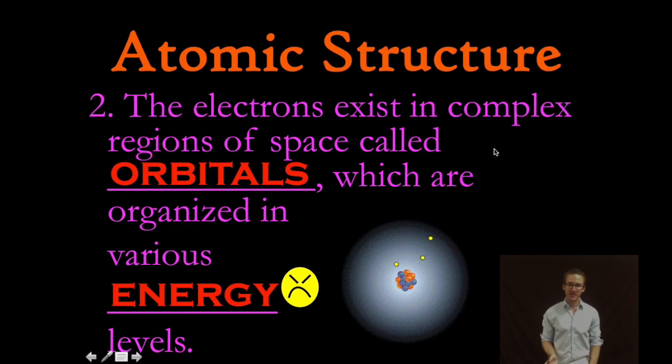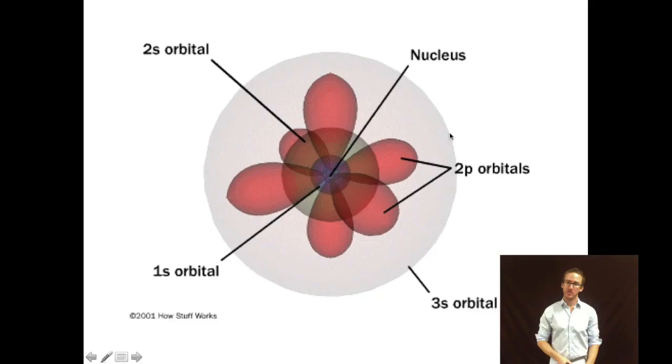Last couple of things here we'll talk a lot more about electrons and the electron cloud in its own special unit but recognize that they exist in complex region of space called orbitals which are organized in various energy levels. Remember this model of the atom where that empty space is divided up into orbitals is our current understanding of the structure of the atom.